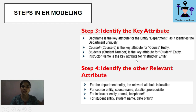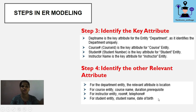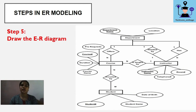Step four is to find all other relevant attributes. For Department: location. For Course: course name, duration, and prerequisites. For Instructor: room number and telephone number. For Student: student name and date of birth. After gathering all this information, we integrate everything and represent it with the ER diagram.